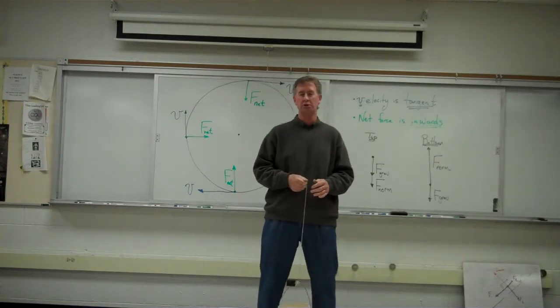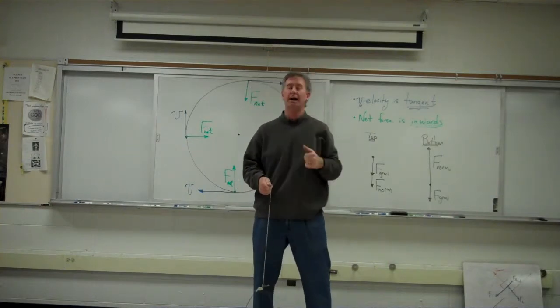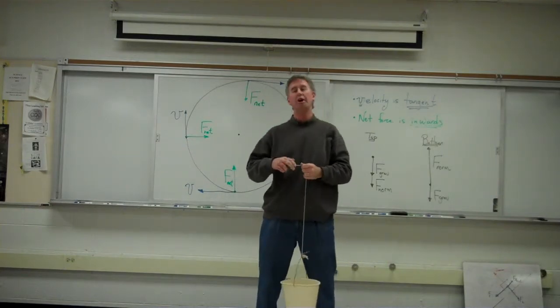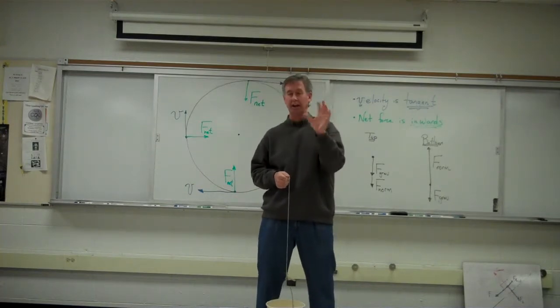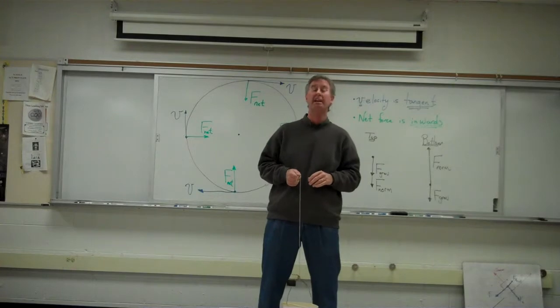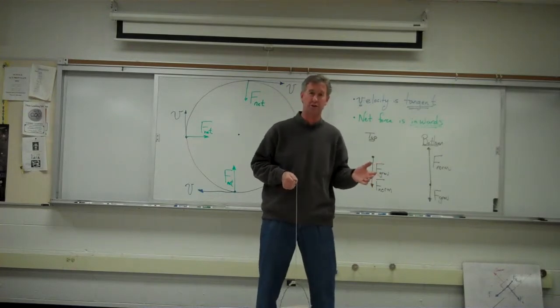And as I do, when I get a high enough speed, at the very top of the circle, the water wishes to travel tangent to the circular path. The wall of the bucket surrounds that water, preventing it from falling tangent to the circular path.